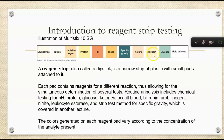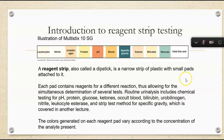Each reagent strip, we often call them dipsticks. It's basically a little plastic piece — this is the hold end — with small plastic pads attached to it. Each pad feels fuzzy if you touch it. It's the same thing as if you have a pool or a spa, like your pH strips where you test the chemicals in your hot tub.